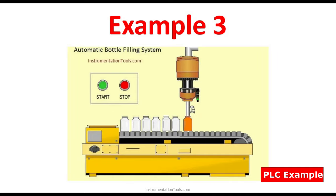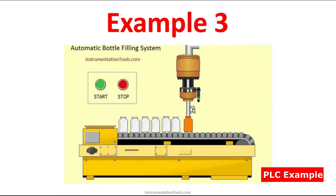Let us analyze this example picture — automatic bottle filling system. Here we are having start and stop push buttons. This start button is to start the process, and the stop button is to stop the process in an emergency case or whenever you want to turn off the process in a normal way. Here we are having a conveyor with bottles arranged on it, and there is a drink in the tank which fills into the bottles.